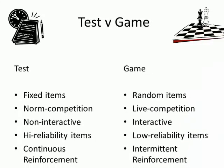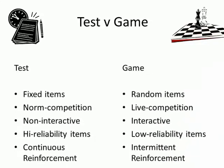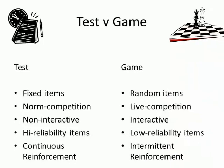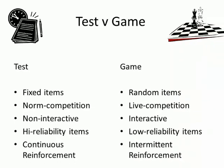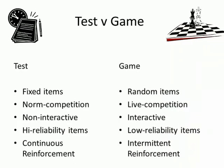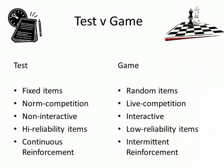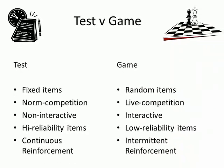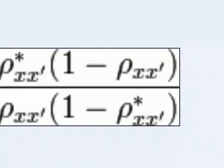A test is a standard measure. A game deliberately generates a different sequence each time. Can we compare them?